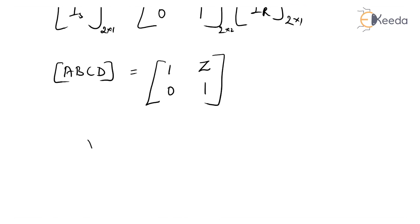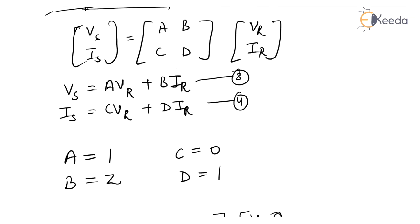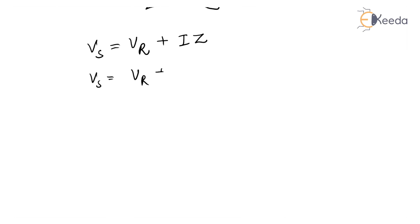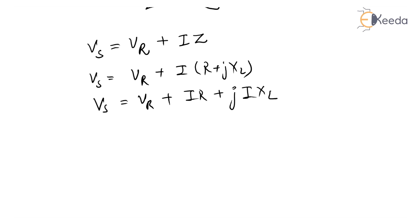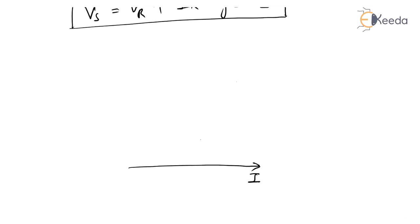When there is a load, the sending end voltage Vs equals VR plus I times Z, where Z equals R plus jXL. So Vs equals VR plus IR plus jIXL. Assuming a lagging load with current as reference, in a lagging load condition voltage leads the current. The power factor of the load is phi_r, so current lags the receiving end voltage by phi_r.